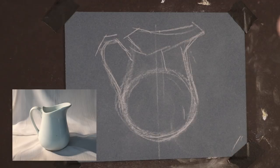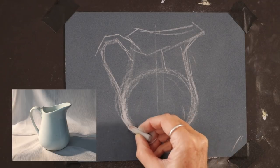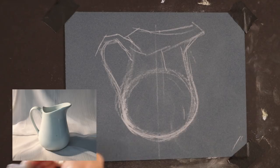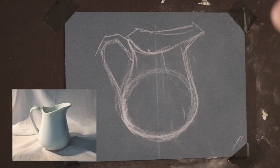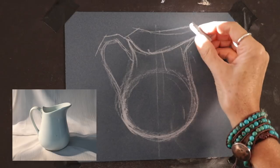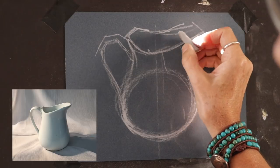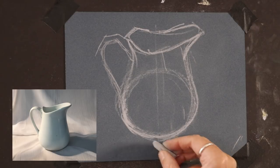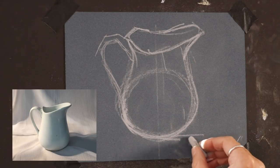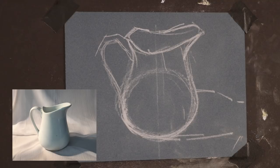It's easier for me to start out thinking of it as planes and then I can smooth out the edges a little bit later. I'm going to indicate where the cast shadow is sitting. I think that's enough to get me going.